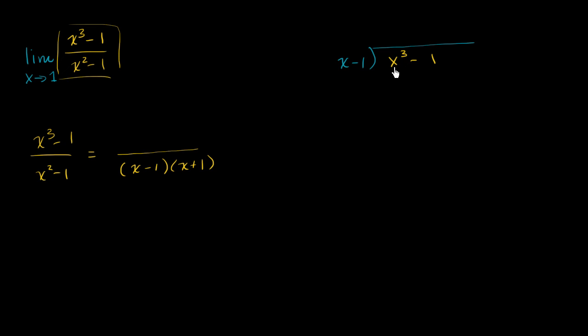So x minus 1, we just look at the highest degree term. x goes into x to the third x squared times. Actually, let me do it this way so that we can keep track of the place. So this would be the second degree place, first degree place, and this would be the constant. So x to the third minus 1. x goes into x to the third x squared times. x squared times x is x to the third. x squared times negative 1 is minus x squared. Now we're going to want to subtract this. So we are then left with x squared.